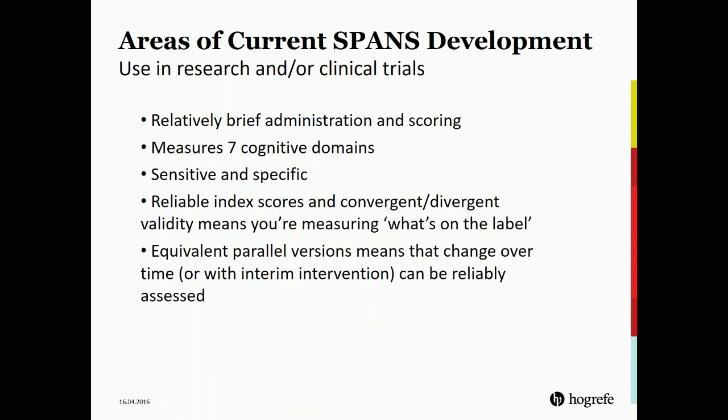Finally, we'd like to suggest that we would love to get the SPANS involved in more research, and we believe it would be very useful because of its relatively brief administration and scoring time, that it reliably measures seven cognitive domains, that it is sensitive and specific, and that there is very good evidence so far that we know what we are measuring when using the SPANS. The highly equivalent parallel versions mean that if there is an interim intervention, or research needs to look at time point A and time point B, this is the most reliable and useful way to test and retest.